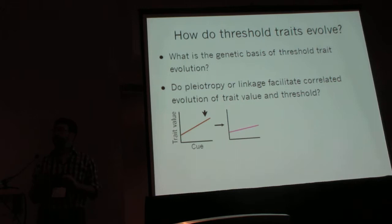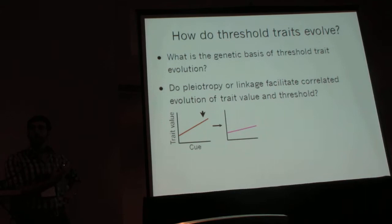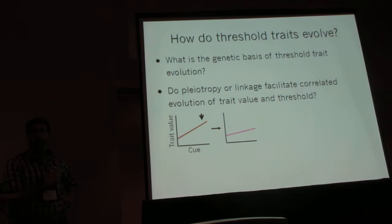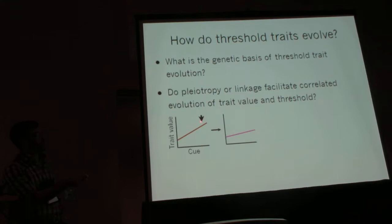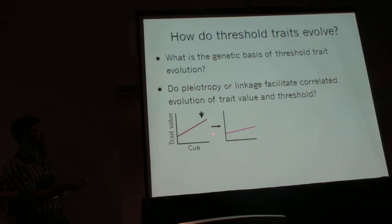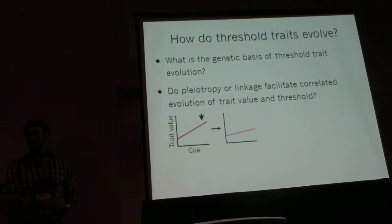A final question about how threshold traits evolve genetically is whether pleiotropy or linkage could facilitate the correlated evolution of both the value of the trait — that is, when it is expressed — and the threshold that determines whether or not it's expressed. To understand what I mean, first consider a continuous environmental response. If within a generation selection is acting to reduce the value of the expressed phenotype, by necessity that's also going to change the parameters of the reaction norm, in this case the slope.